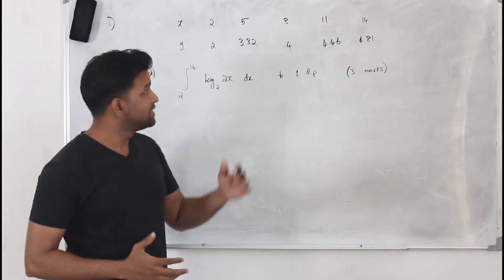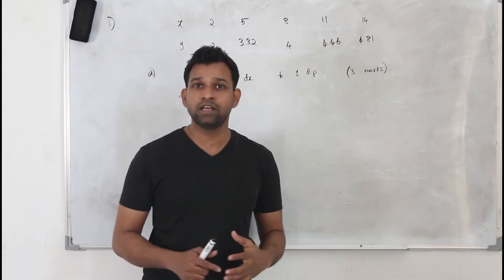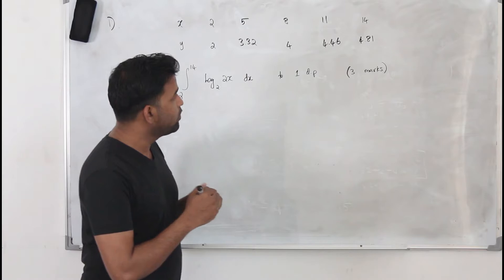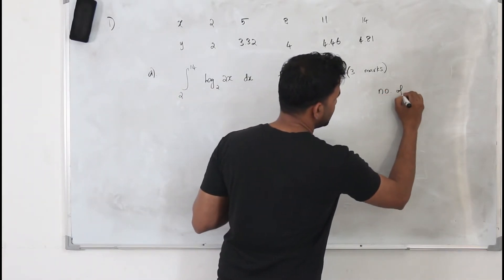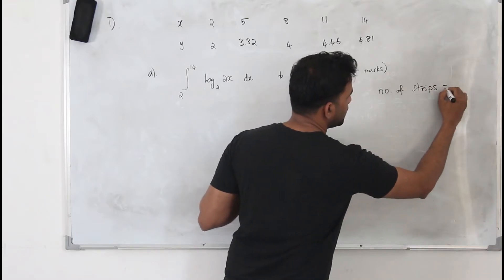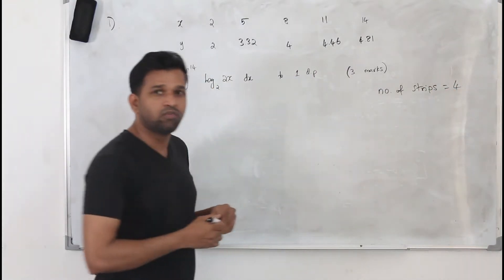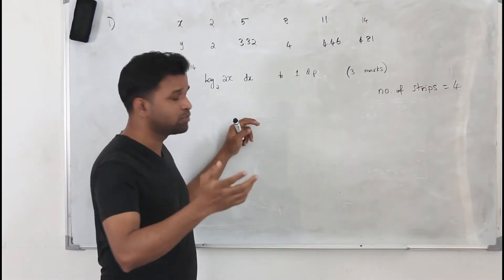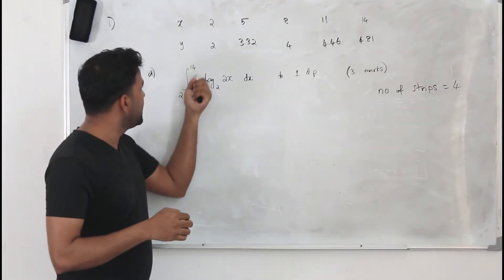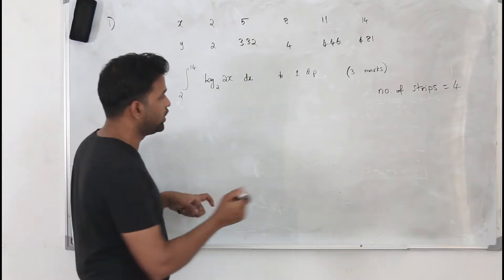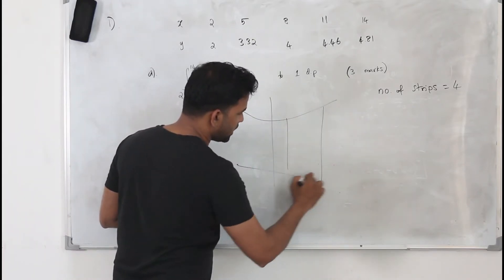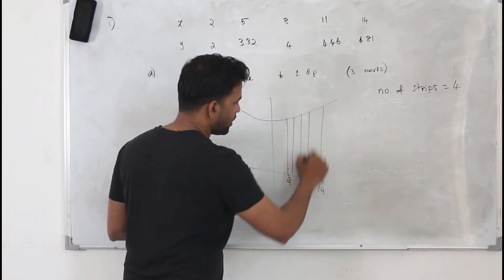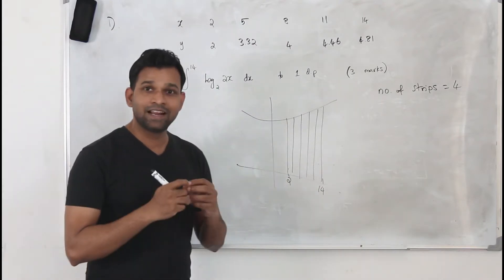Sometimes you won't be given this table — you need to create one. If the table is not given, you will be given other information like the number of strips — say four, five, six, or eight strips. That means when you draw a curve, you are finding the area under the curve between the limits 2 to 14. The trapezium rule divides this area into strips; each strip is considered as a trapezium.